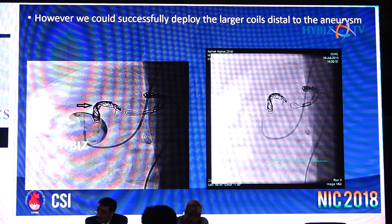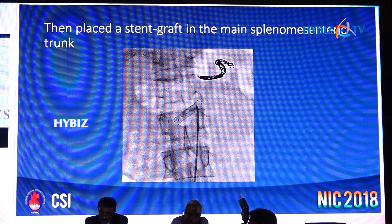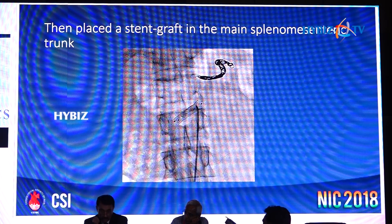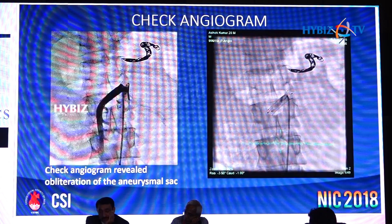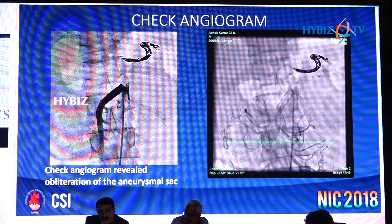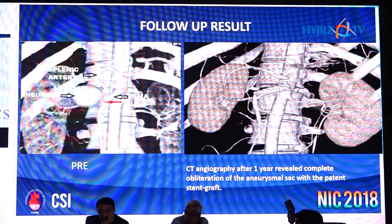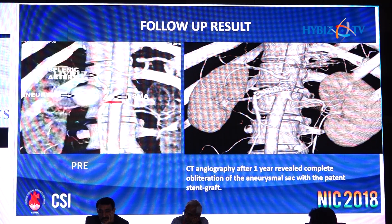After putting a coil at the distal end, there was no flow in the distal splenic artery through the aneurysm. After that we placed a stent across the SMA, obliterating the entry site of the aneurysm. The final angiogram clearly showed there was no flow across the aneurysm. We got a CT done at follow-up and the patient was asymptomatic.